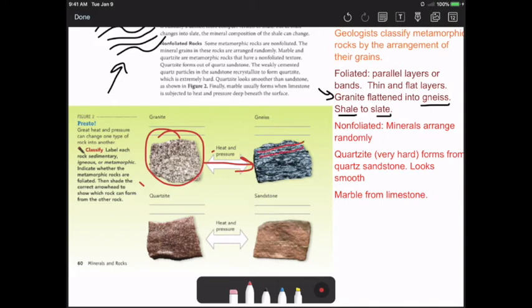Quartzite, through sandstone, through great pressure, changes into quartzite. Now quartzite is non-foliated and its minerals are arranged randomly. So if you look at this, they're kind of arranged randomly. Quartzite is extremely hard and again it forms from sandstone and also quartz. It looks nice and smooth.